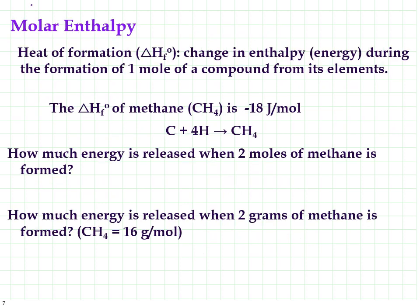Let's talk about molar enthalpy, because we do love moles. Heat of formation is the enthalpy or energy needed to form one mole of a compound from its elements — either the energy needed or the energy released. When I look at the heat of formation of methane — the gas in our Bunsen burners — the heat of formation is negative 18 joules per mole. That negative means energy is being released to the environment. 18 joules per mole of methane is released when methane is formed from carbon and hydrogen, because methane is more stable than the separate atoms.